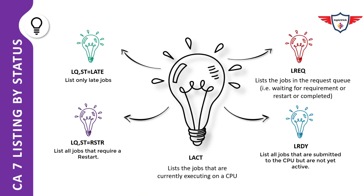Now let's look at different formats of the CA7 LQ command. Instead of listing all jobs across all queues, you can narrow down results to a specific queue, status, or job. The first variant is LQ ST=LATE, which lists only late jobs. The next variant is LQ ST=RSTR, which lists all jobs that require a restart. The next three commands are useful for printing the status of individual queues: LREQ lists jobs in the request queue; LRDY lists jobs submitted to the CPU but not yet active; and LACT lists all jobs currently executing on the CPU.